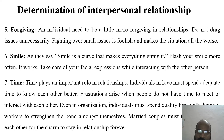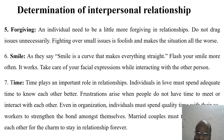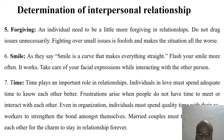Forgiving is another key determinant. An individual needs to be a little more forgiving in relationships — do not drag issues unnecessarily, as fighting over a small issue is foolish and makes the situation worse. Smile is also important; as they say, a smile is a curve that makes everything straight, so flash your smile more often and take care of your facial expression while interacting with others. Finally, time plays an important role — individuals must spend adequate time to know each other better, as frustration arises when people do not meet or interact, and in organizations, spending quality time with co-workers strengthens the bond among themselves.